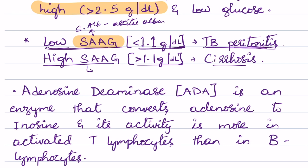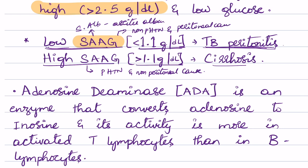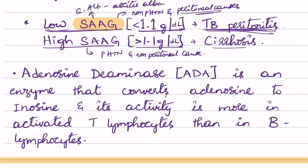High SAAG indicates portal hypertension and suggests a non-peritoneal cause for ascites, whereas low SAAG indicates a peritoneal, non-portal hypertension cause for ascites. High SAAG is usually seen in cirrhosis, Budd-Chiari syndrome, nephrotic syndrome, and congestive heart failure, whereas low SAAG is seen in peritoneal causes such as TB peritonitis, primary peritoneal mesothelioma, and secondary peritoneal carcinomatosis.